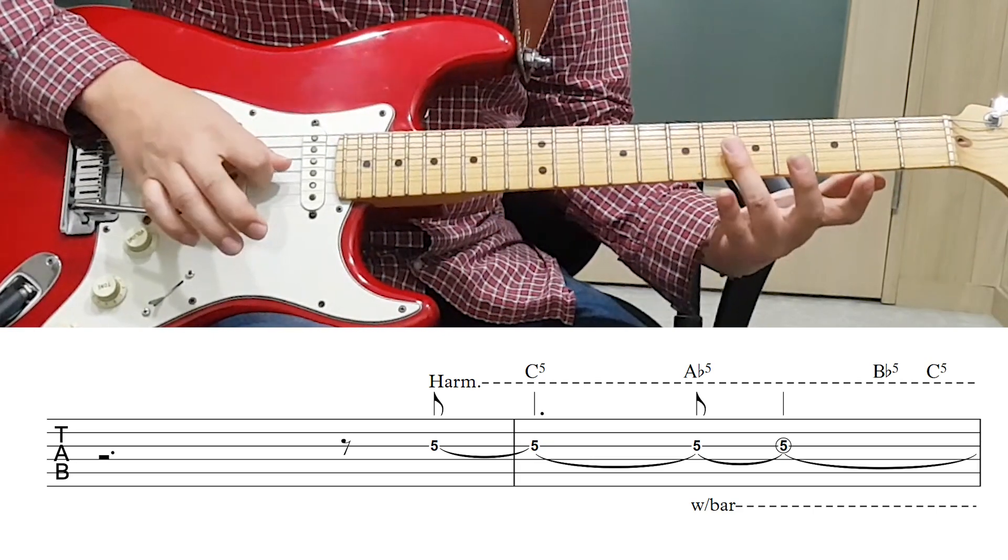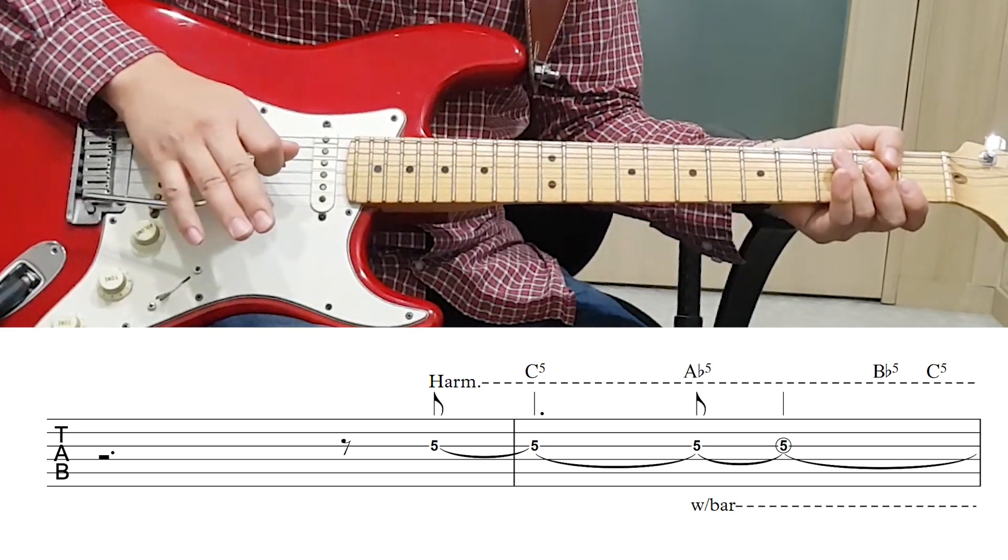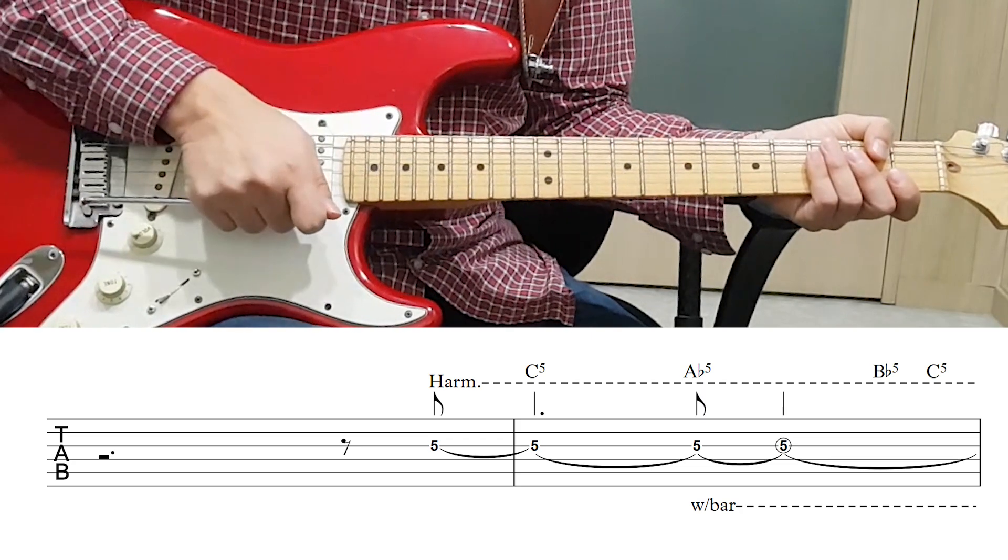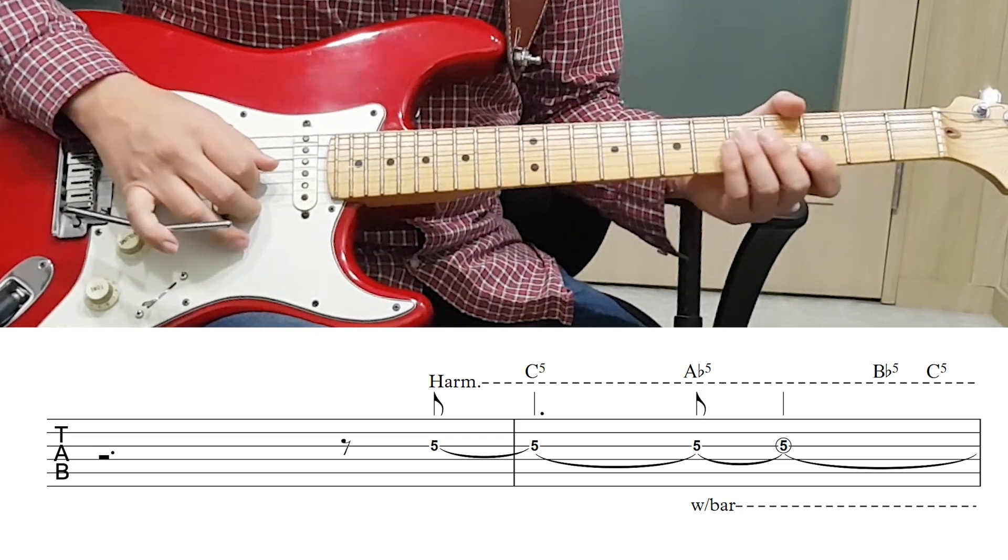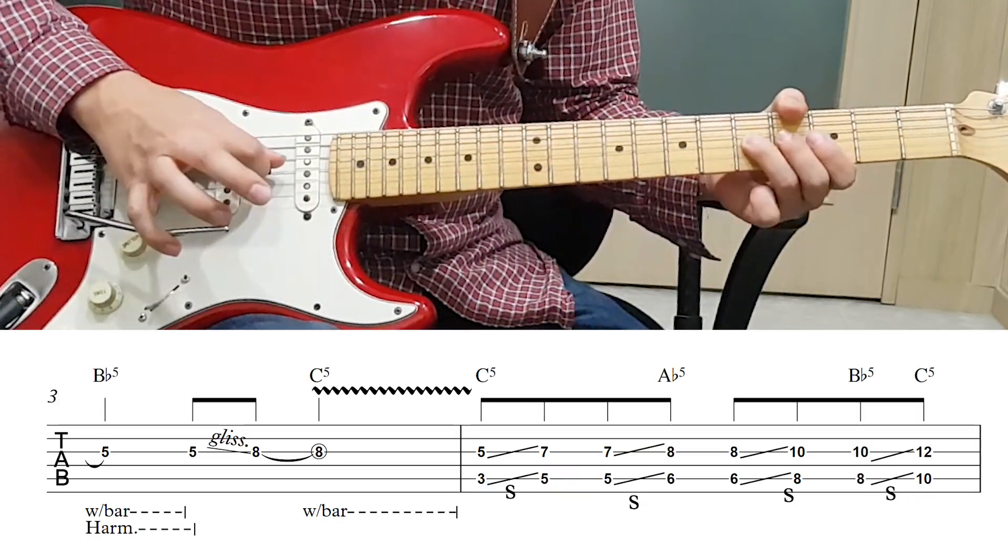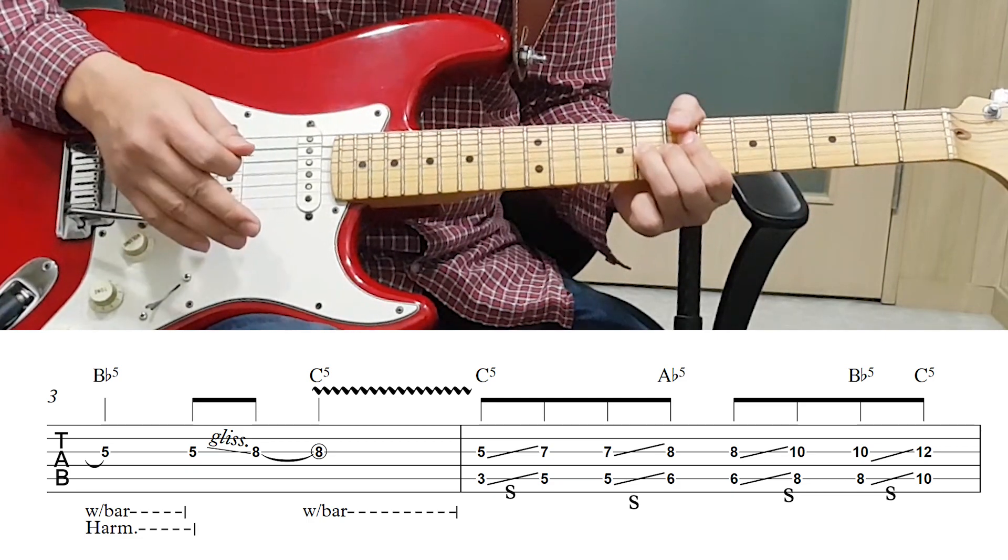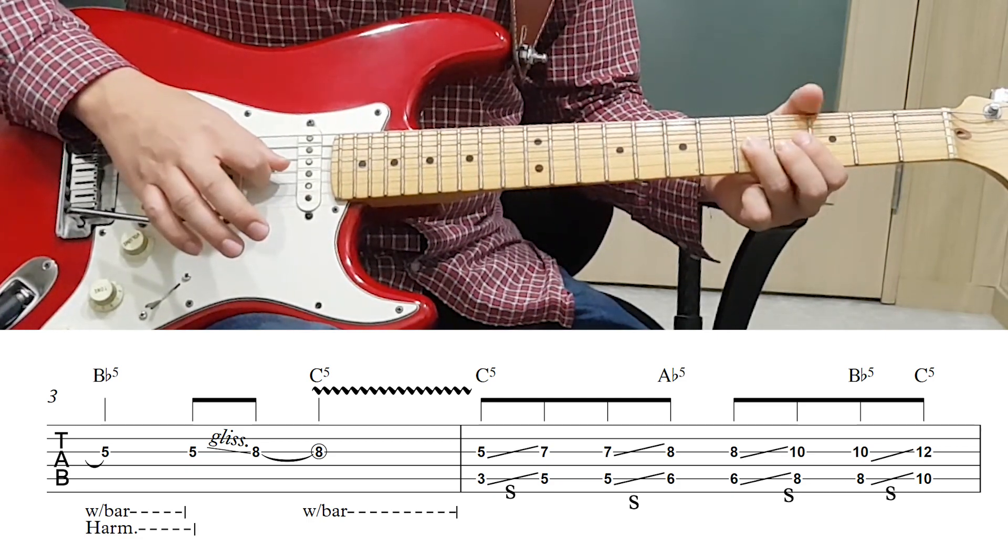이런식으로 Harmonics를 친 다음에 Arm으로 Arm Down 이렇게 내려주시면 되구요. 그 다음에 5프렛에서 A플렛으로, 마찬가지로 8프렛으로 이동하면서.